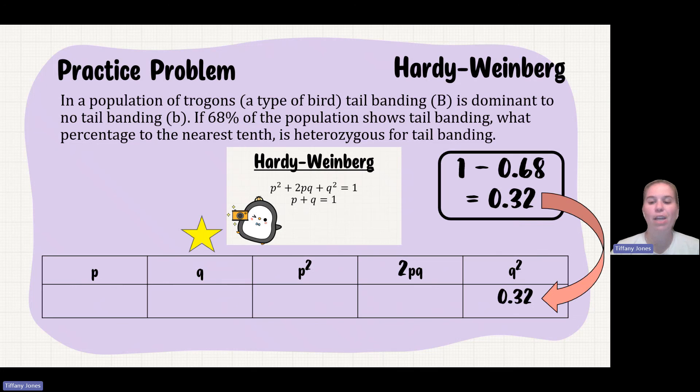Once I know my Q², I can find my Q, take the square root of 0.32, giving me 0.566. Once I know Q, I can solve for P because P + Q = 1. So 1 minus the 0.566 gives me my 0.434.